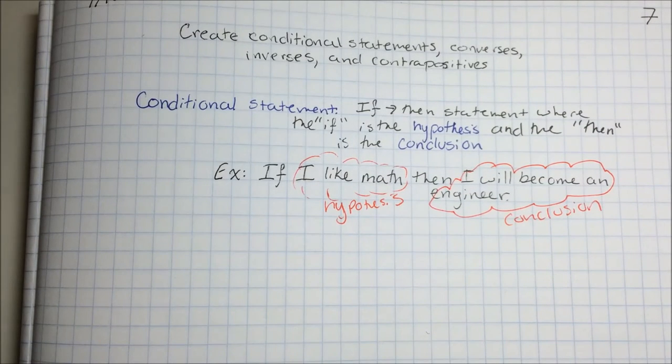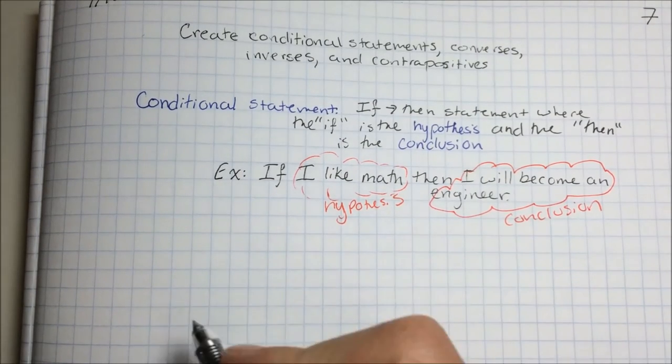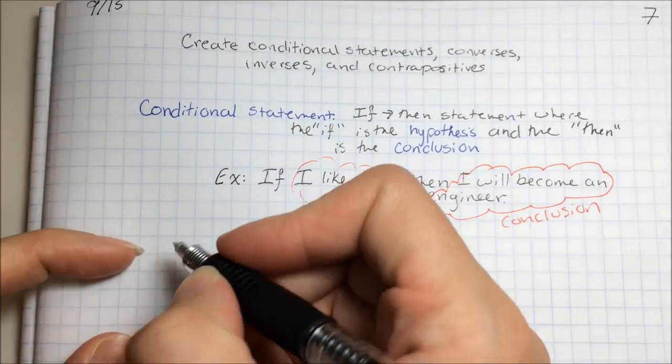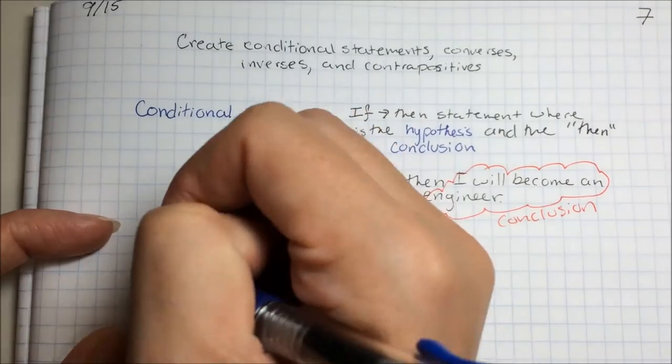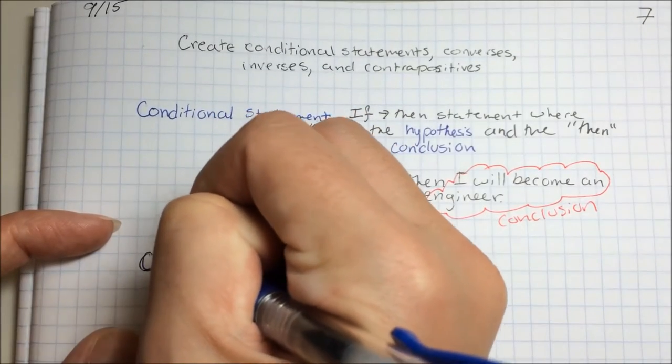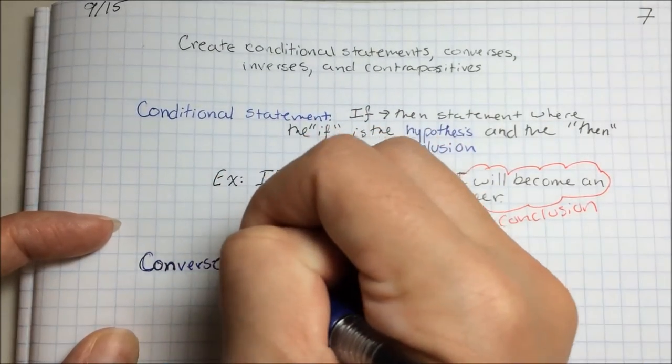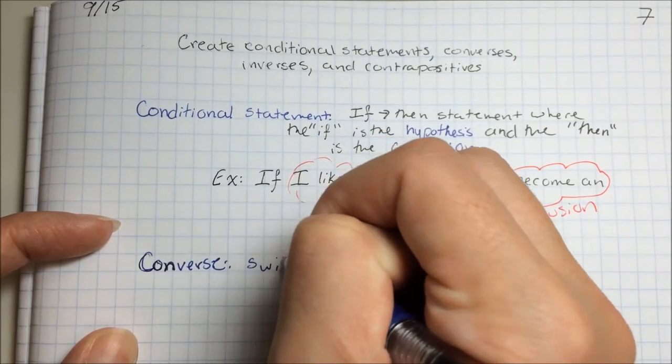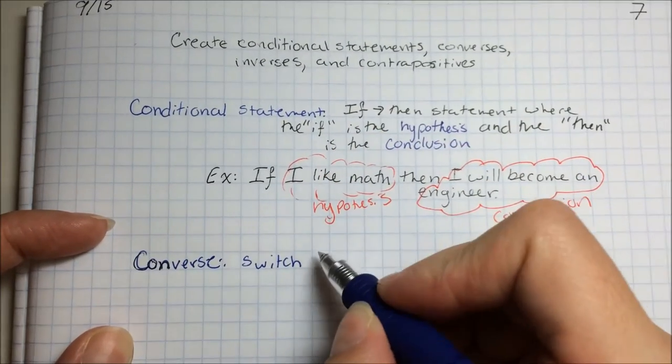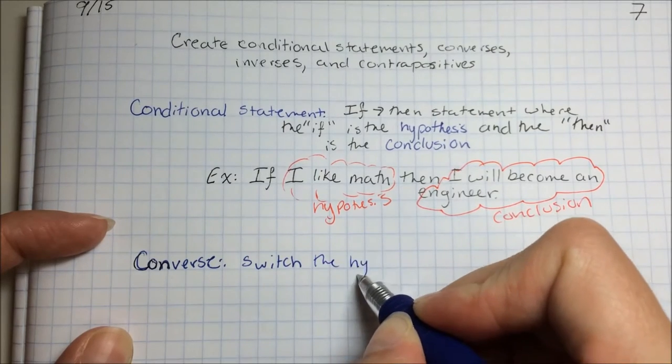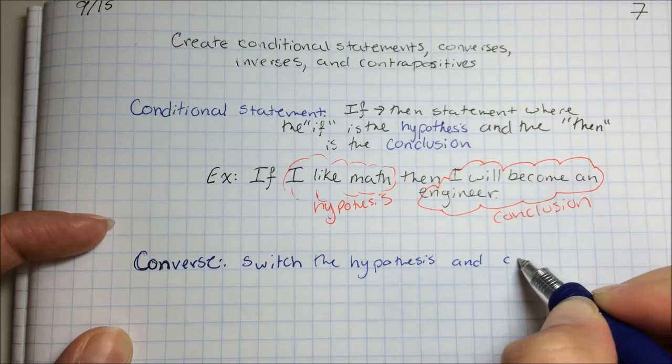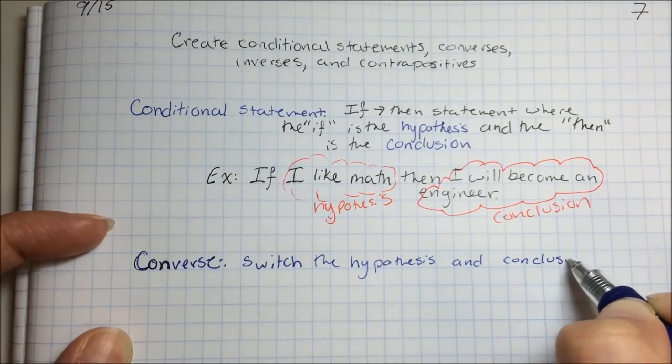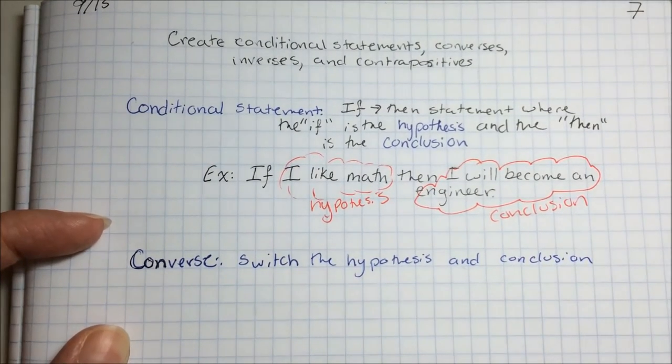So then there's more to this beyond conditional statements. We can get into a converse. A converse is where you switch the hypothesis and conclusion. So if we go back to our example, if I like math then I will become an engineer, the converse of that would be...